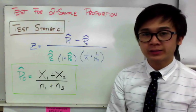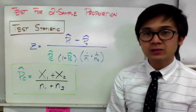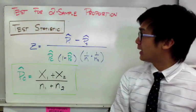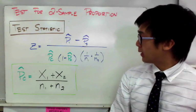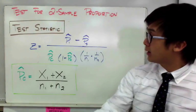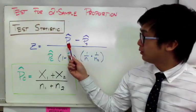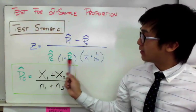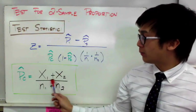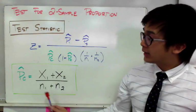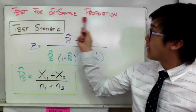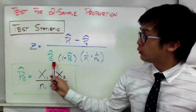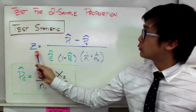Today we're going to do hypothesis testing for two-sample proportion. The test statistic z is equal to p-hat 1 minus p-hat 2, all over the square root of p-hat c times its complement, multiplied by 1 over n sub 1 plus 1 over n sub 2. Here p-hat 1 is the sample proportion for the first sample and p-hat 2 is the sample proportion for the second sample. p-hat c is calculated as x sub 1 plus x sub 2 all over n sub 1 plus n sub 2, and it is used to test normality and appears in the z formula.